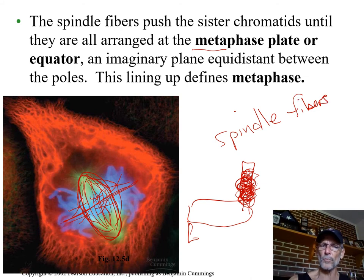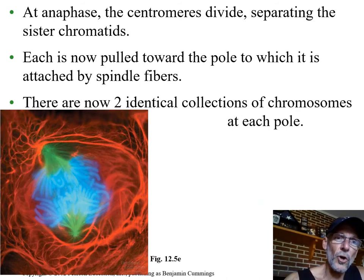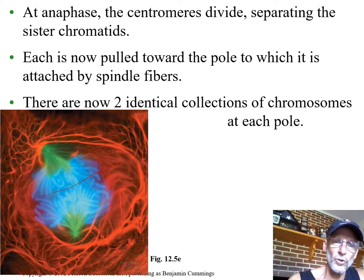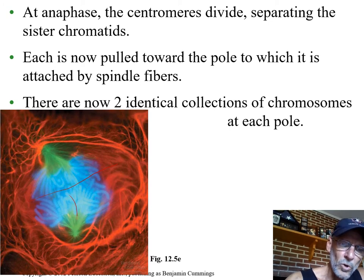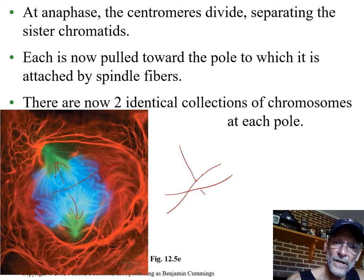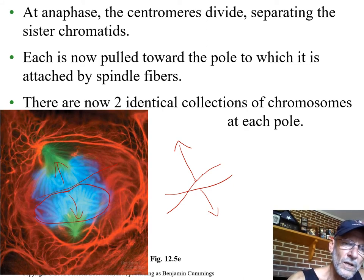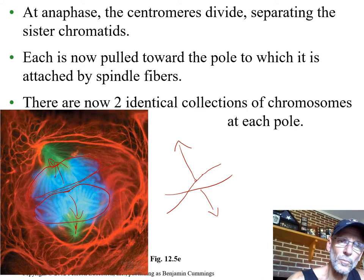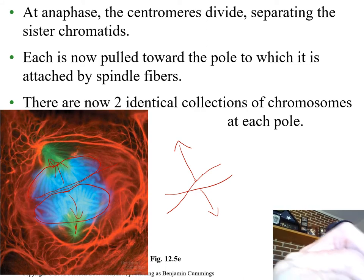These microtubules attached to the chromosomes are called spindle fibers, and they are going to pull apart the chromosomes. Now they're starting to pull them apart — you can clearly see them being pulled apart, further and further, towards each pole. Because of how they lined up, each double-stranded chromosome with two identical copies has one copy pulled one way and one pulled the other way. We end up with a clump of identical single-stranded chromosomes going toward one pole and one going toward the other pole. This is called anaphase — ana being Greek for separate.